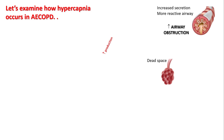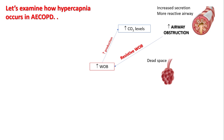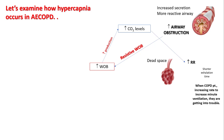In a COPD exacerbation — say from infection — the airways are more inflamed and reactive, there is more secretion, and there is more airway obstruction. This causes increased resistance to breathing and increased CO2 levels due to increased production. That would make these patients breathe faster, and when COPD patients increase their respiratory rate to increase minute ventilation, they are getting into trouble.